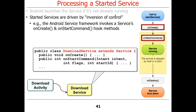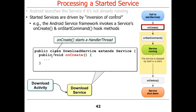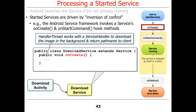Once the service is activated, it's up and running. If the system deactivates it because Android decides it's out of memory and shuts it down, then onCreate may have to be called again. But typically you can think of onCreate as something like a constructor — a virtual constructor that initializes the lifecycle of a service. The handler thread works in conjunction with the service handler to do the downloading of the image in the background and return the path name to the client.